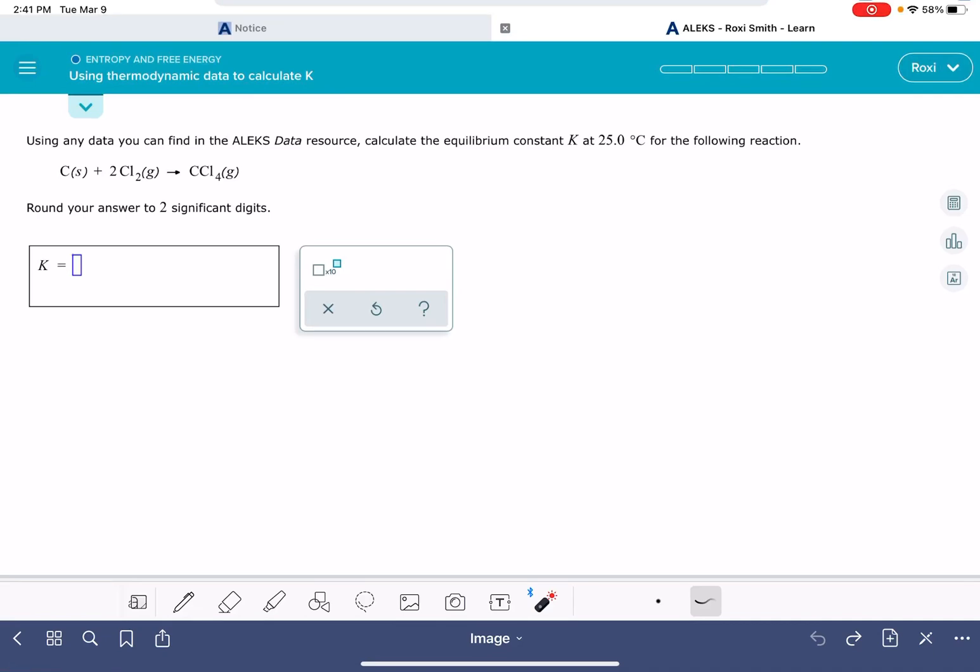In this video, I'll show you how to solve the Alex problem using thermodynamic data to calculate K. In this problem, we are going to be calculating the equilibrium constant K using the equation delta G standard equals negative RT ln K.